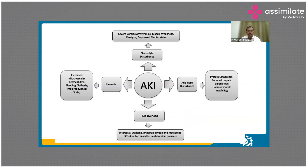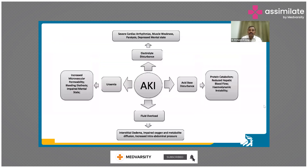What is the pathophysiology? There are four facets of acute kidney injury as far as pathophysiology is concerned. One is fluid overload and electrolyte disturbance. We know what sort of electrolyte disturbances might be caused by acute kidney injury, and fluid overload because enough fluid is not going out of the body. There can be uremia because of accumulation of urea, blood urea, and there is disturbance in acid-base because of protein catabolism and reduced blood flow.